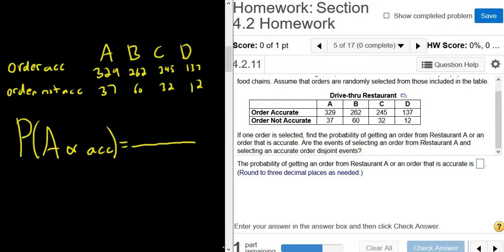The question wants the probability of getting an order from restaurant A or an order that is accurate. So the probability of getting an order from restaurant A or an order that is accurate, that's going to be the number of ways to get an order from restaurant A or an order that is accurate divided by the total number of possibilities.